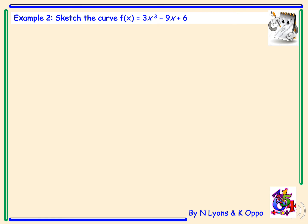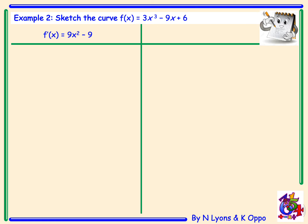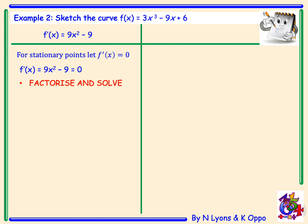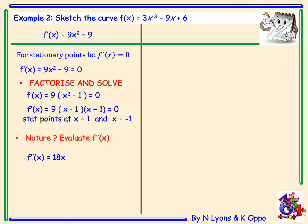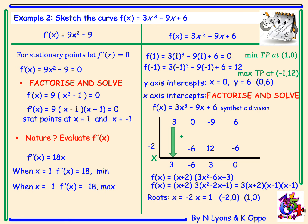Example 2: Sketch the curve f(x) = 3x³ - 9x + 6. We start by looking at our stationary points. Our derivative is 9x² - 9, and for stationary points we let f'(x) = 0. Factorising: 9x² - 9 = 0; taking out a common factor of 9 gives x² - 1, which is a difference of two squares: 9(x - 1)(x + 1) = 0. Therefore our stationary points occur when x = 1 and x = -1.